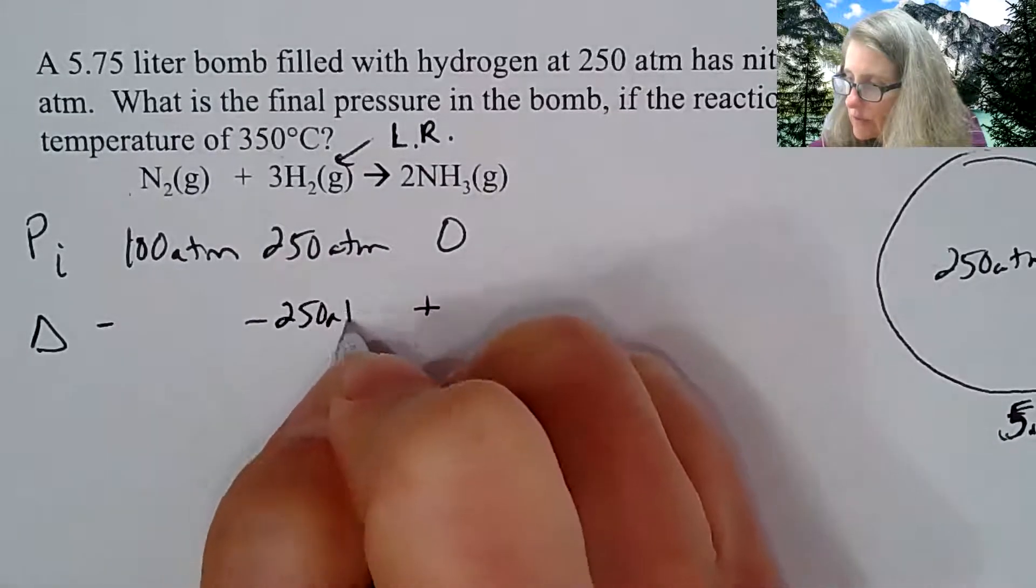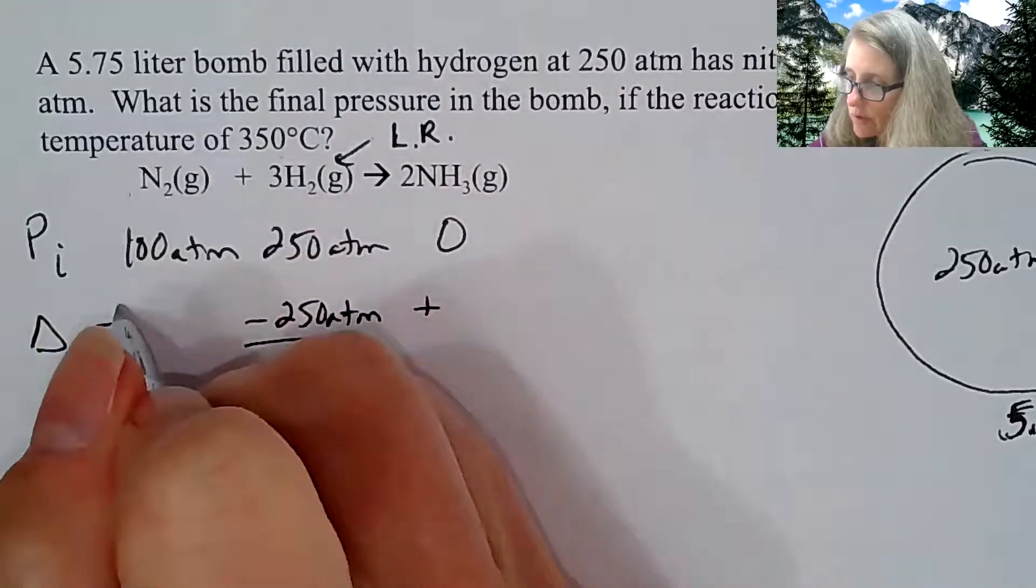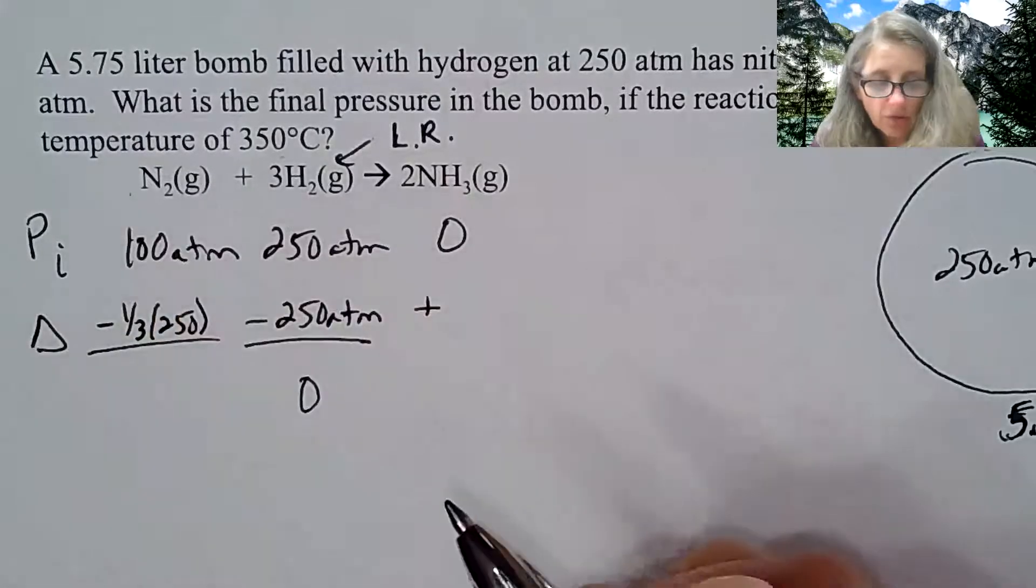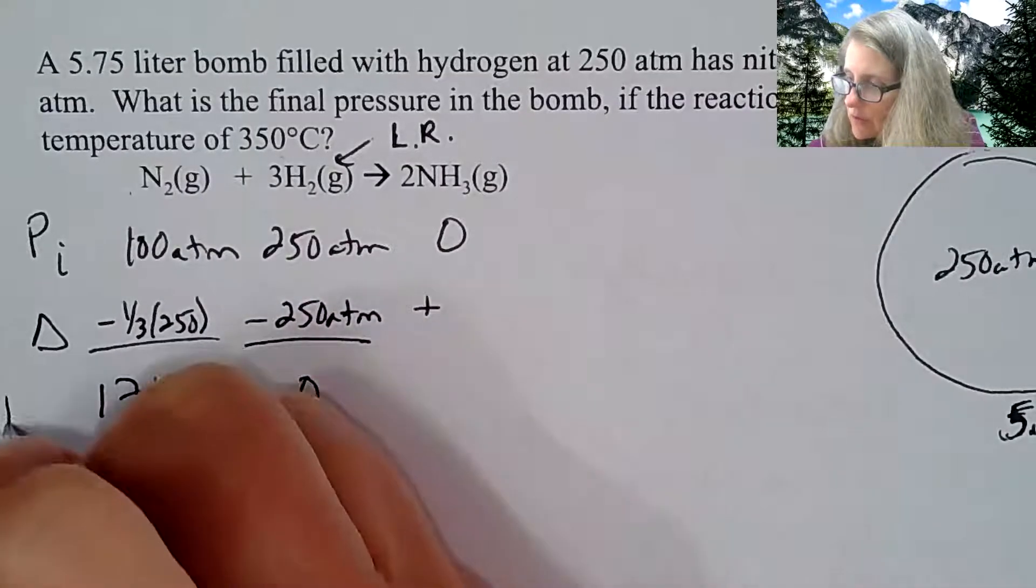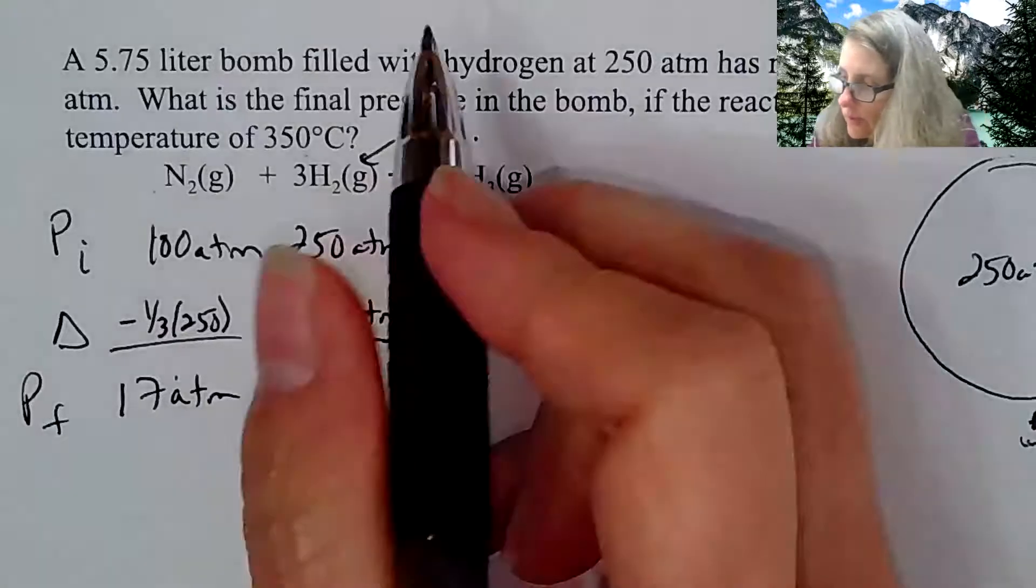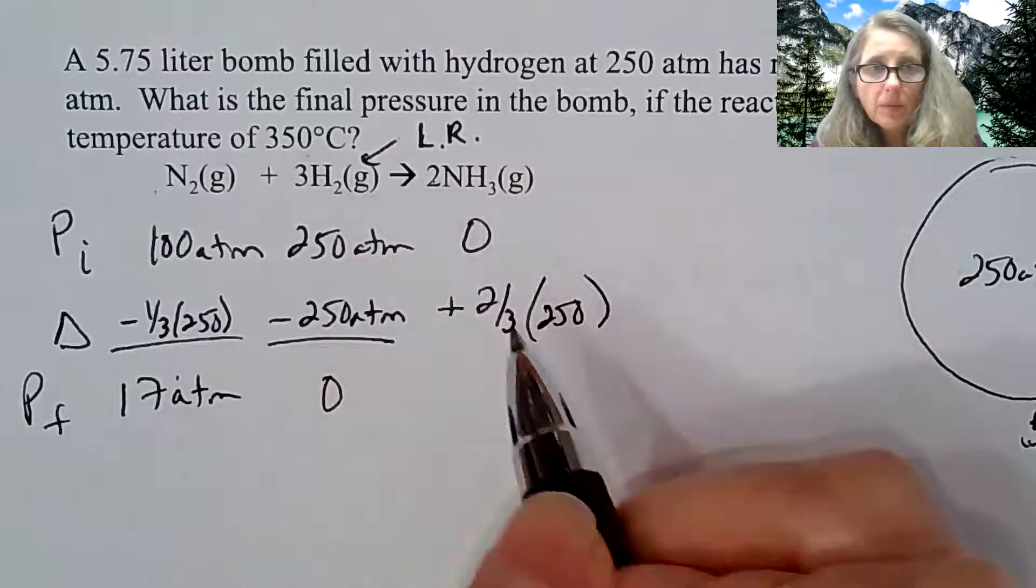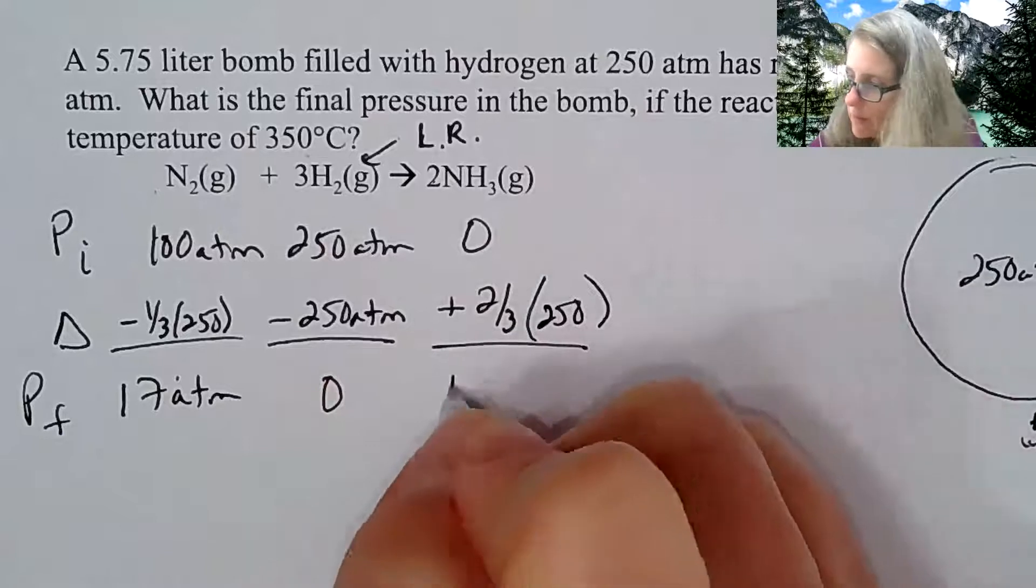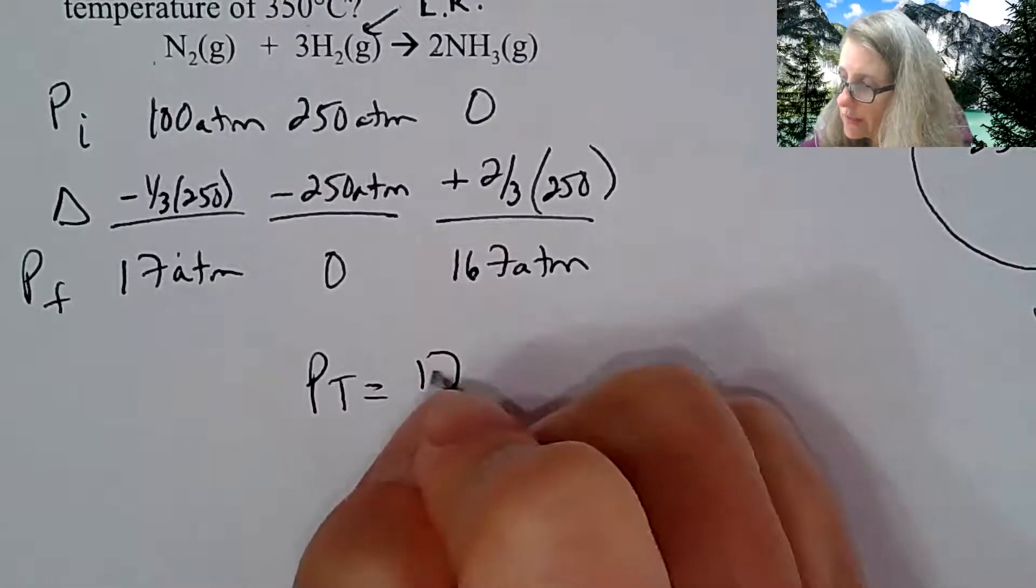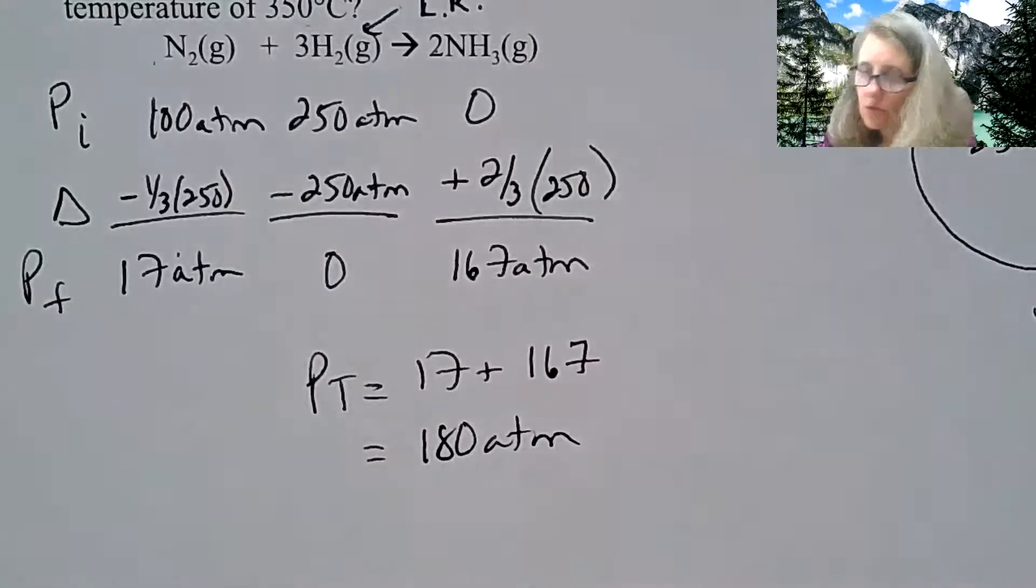If that's my limiting, this is going to go down to essentially zero. My change here is going to be proportional. It's going to be a third of the 250 because it's a 1 to 3 relationship. This comes out to be around 17 atmospheres. This is the pressure final. What is my pressure of my ammonia? That's going to be two-thirds of the 250 because this is a 2 to 3 relationship with the hydrogen. That comes out to be about 167 atmospheres. So what is my total pressure? All you got to do is add the 17 plus the 167 and you end up with about 180 atmospheres.